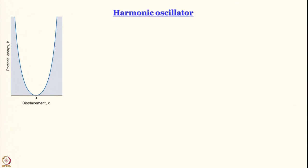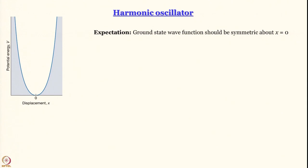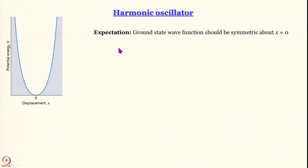With this prior knowledge, we tackle the harmonic oscillator first. The potential energy is a parabolic potential, ½kx². The first expectation is that the ground state wave function must be symmetric about x = 0, since the potential itself is symmetric. So what kind of function can we think of? We can think of a Gaussian function, and I encourage you to try that. But what we will do is choose a trigonometric cosine function.